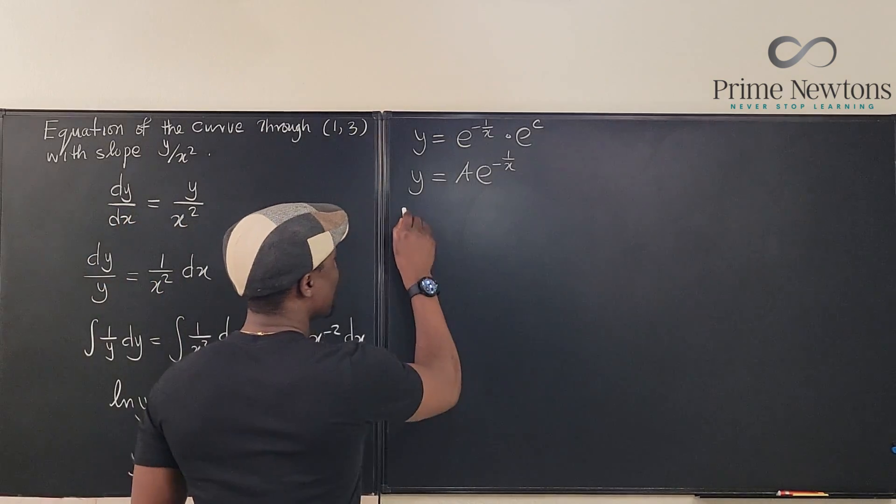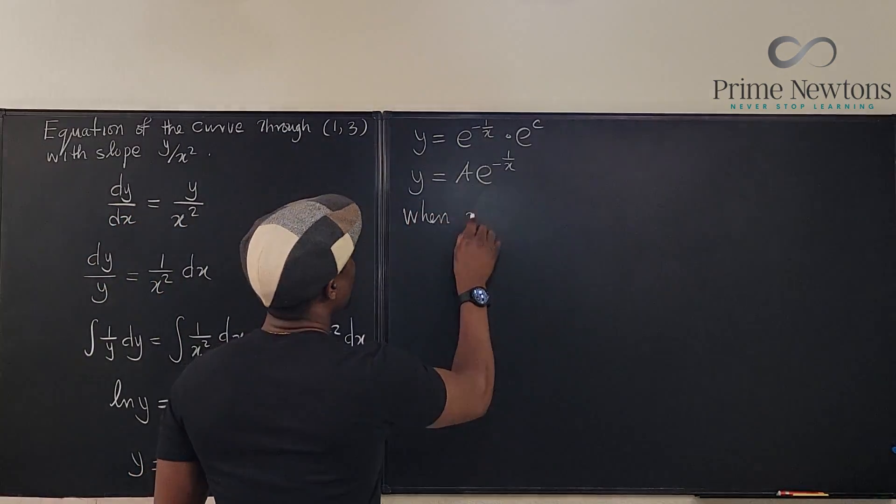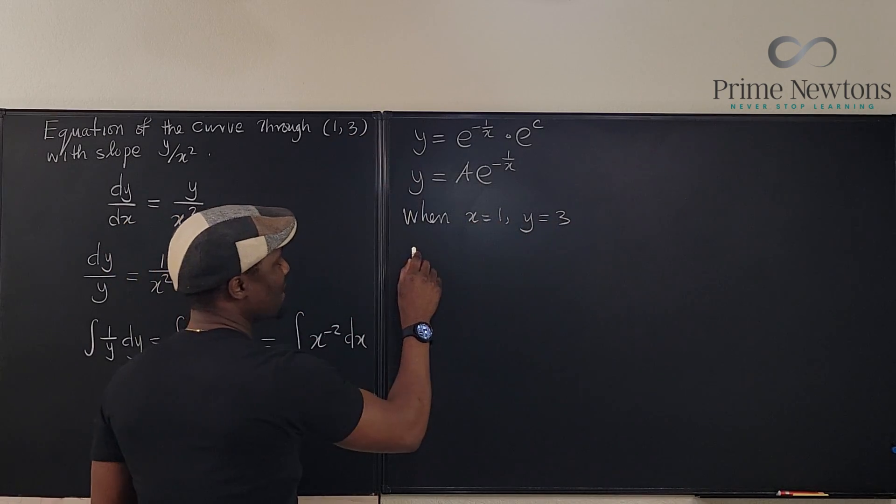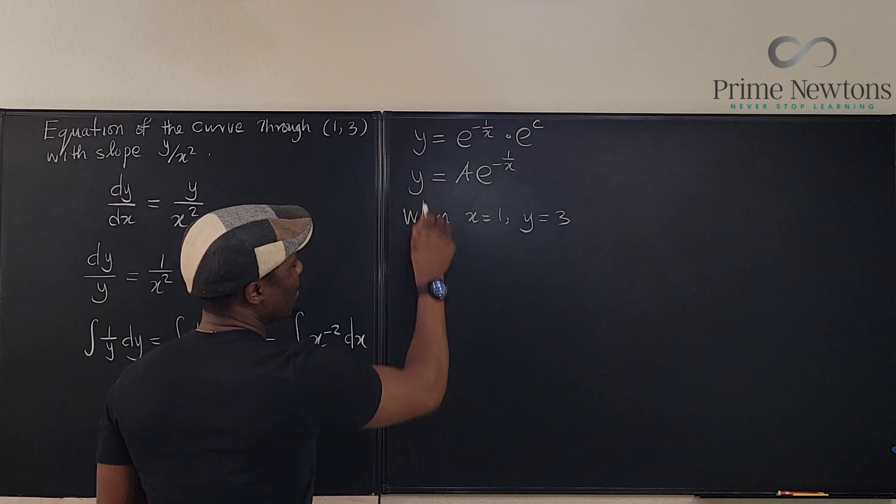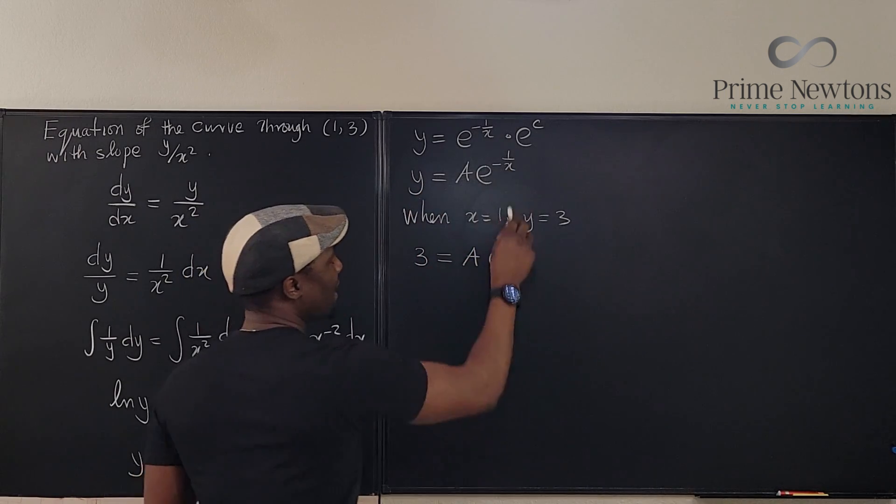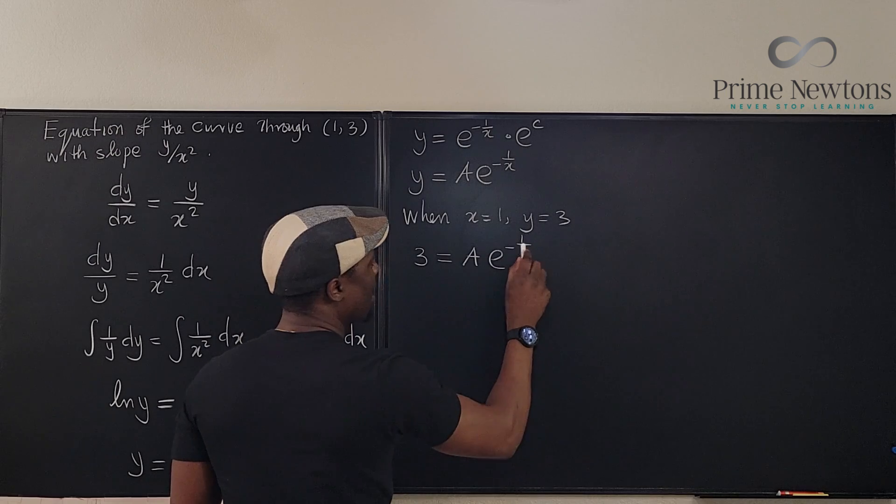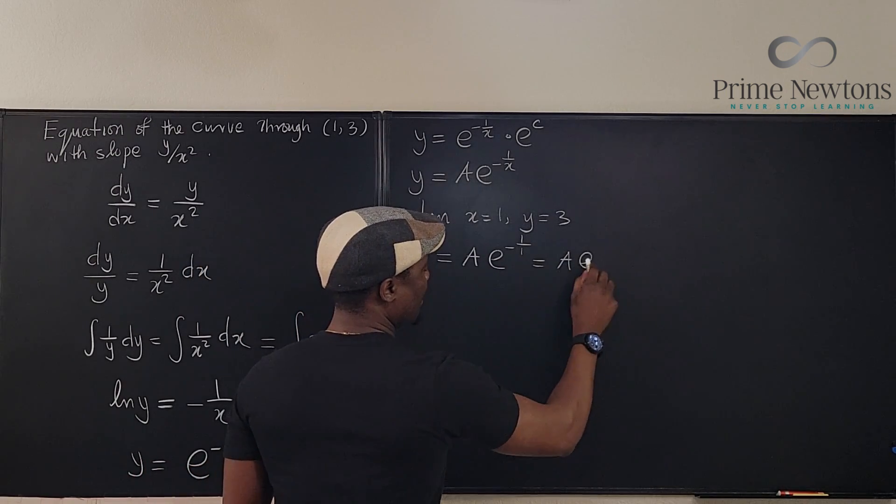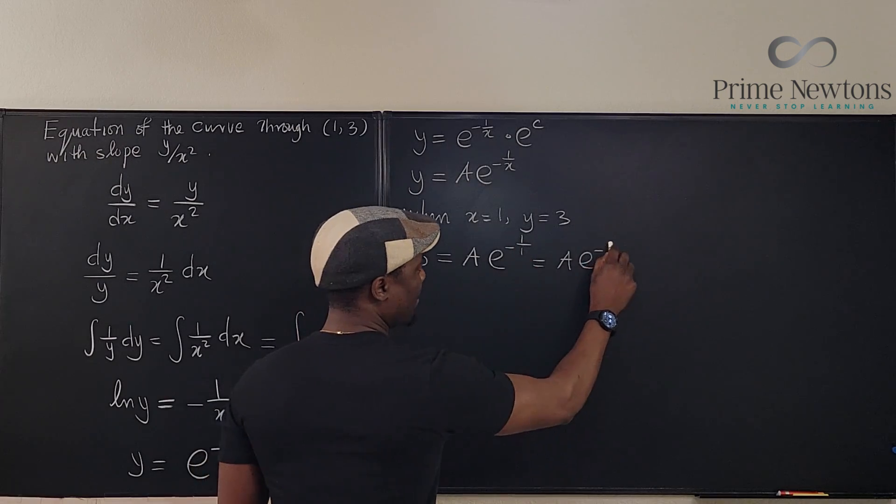So, we know when x is equal to 1, y is equal to 3 from this point. So we can say that 3, which is our y, is equal to a times e to the negative 1 over 1. Oh, interesting. This is the same thing as a, e to the negative 1.